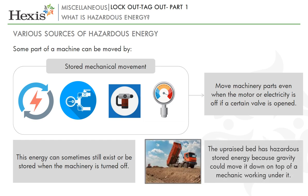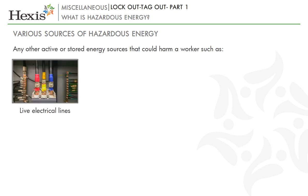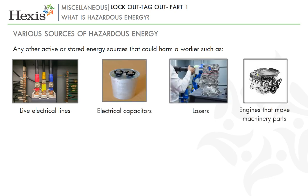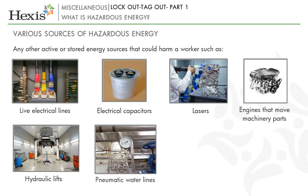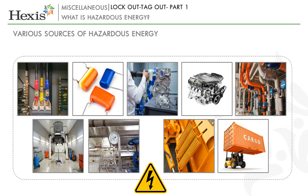In the truck, the up-raised bed has hazardous stored energy because gravity could move it down on top of a mechanic working under it, if the bed is not physically blocked in the up position. Active or stored energy sources that could harm a worker include live electrical lines, electrical capacitors, lasers, engines that move machinery parts, hydraulic lifts, pneumatic water lines, springs, etc. Other examples include forklifts with the forks in the up position, fuel lines such as natural gas to heaters. All these are considered hazardous because just turning them off does not guarantee they won't accidentally be turned on again during maintenance or repair, or they continue to have stored energy after being turned off. Think of a compressed spring or a pressurised line that has not been bled off.